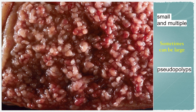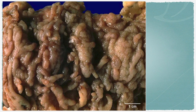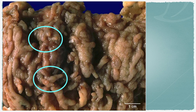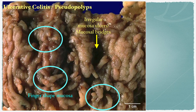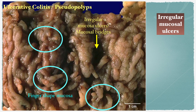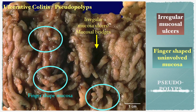This is an example of how pseudopolyps look. They are usually small and multiple but can sometimes be large. This bowel mucosa is obviously abnormal, showing multiple finger-shaped mucosa alternating with irregular mucosal ulcers and mucosal bridges — causing the formation of pseudopolyps in ulcerative colitis. Therefore, pseudopolyps are due to irregular mucosal ulcers that undermine the mucosa, alternating with finger-shaped involved mucosa.